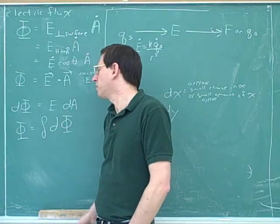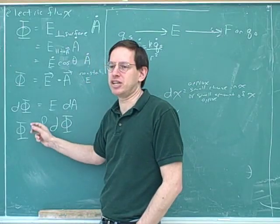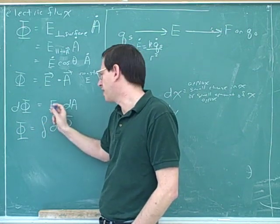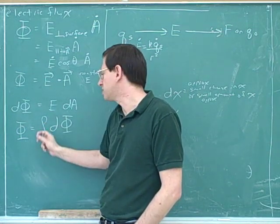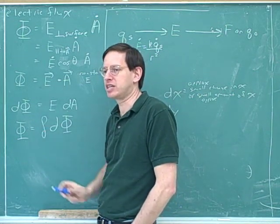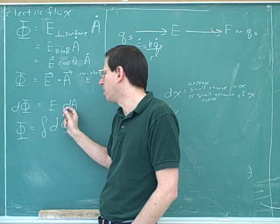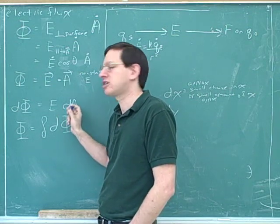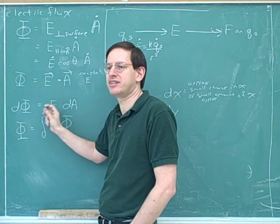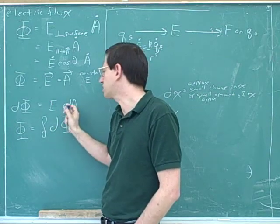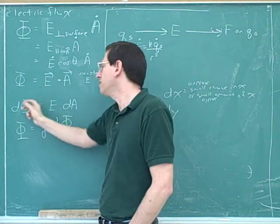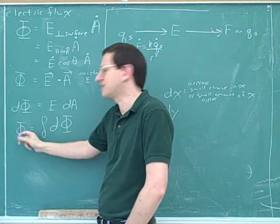But remember, if we only did that, we would still only have an approximation. So the other thing this does is take the limit as the approximation gets better and better. This means take the sum and take the limit of that sum as the approximation gets better and better, which means smaller and smaller areas. As we take smaller and smaller areas, the electric field gets closer and closer to being constant over each area, so the approximation gets better and better — and the limit of all those approximations is the exact answer.